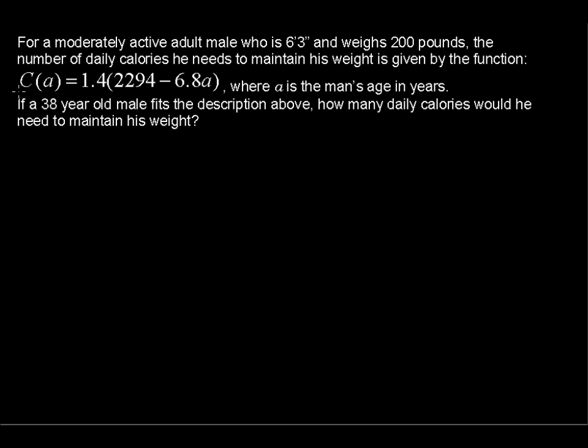First let's talk about this C of A, read as C of A. It doesn't mean C times A there, that's just the way we denote a function. Over here this is 6.8 times A because this is the formula, this expression here. But on this left hand side we read it C of A.